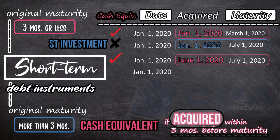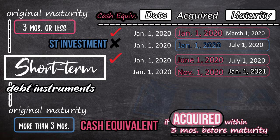An instrument dated January 1, 2020, matures on January 1, 2021 — 1 year original maturity. Comparing dates, it was acquired 2 months before maturity, from November 1, 2020 to January 1, 2021. This is a cash equivalent. The point is: acquired 2 months before maturity.